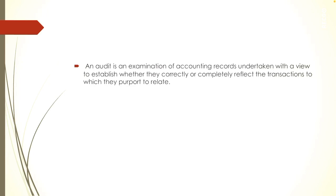As shown by the books, the auditor has to collect evidences — evidence can be vouchers — and he has to evaluate whether the evidence collected is matching with the transactions recorded in the books of accounts. On the basis of this evaluation, he formulates his judgment and gives his opinions and suggestions.